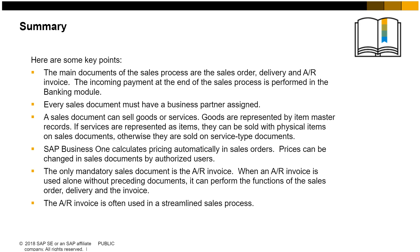SAP Business One calculates pricing automatically in the sales order, and prices can be changed in sales documents by authorized users. The only mandatory sales document is the AR invoice. When an AR invoice is used alone without any preceding documents, it can perform the functions of the sales order, delivery, and the invoice — this is why the AR invoice is often used in a streamlined sales process.